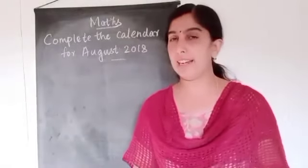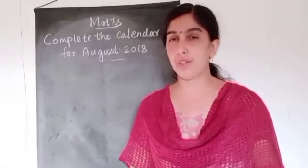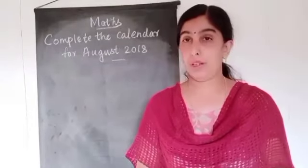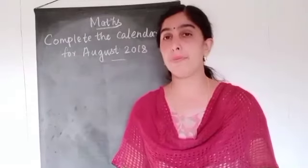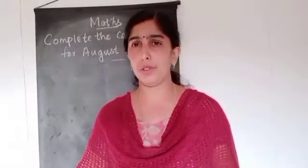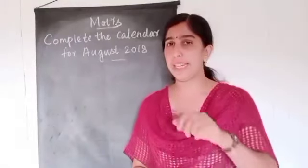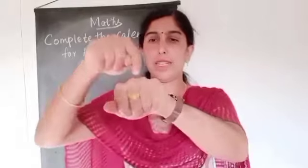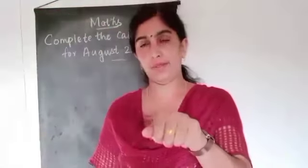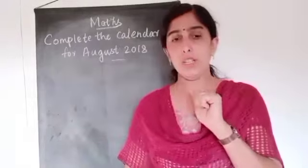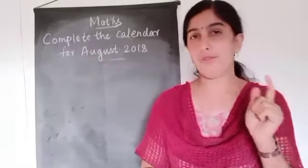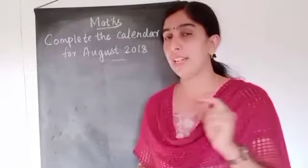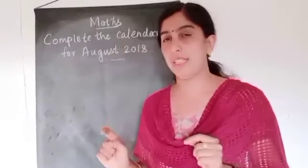How are you going to complete that calendar? You will have to start from 1. Do you remember August has how many days? January, February, March, April, May, June, July, August — so 31 days are there. For August, 31 days are there. So you want to complete from 1 to 31. Fill the numbers 1 to 31.